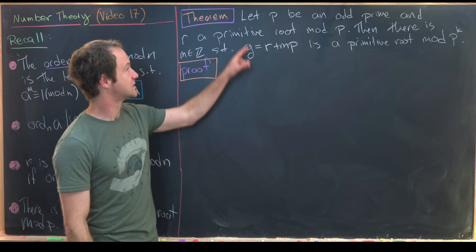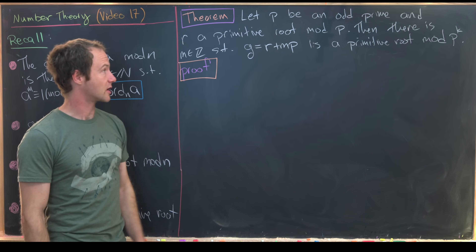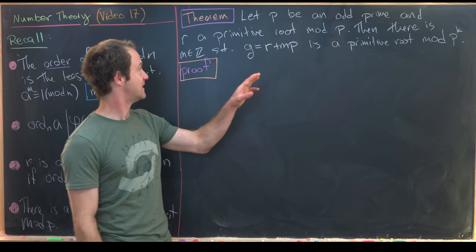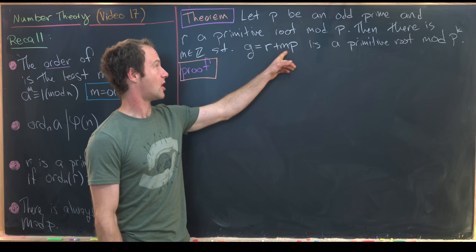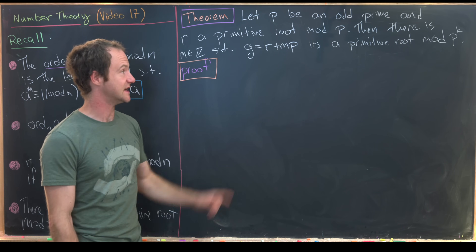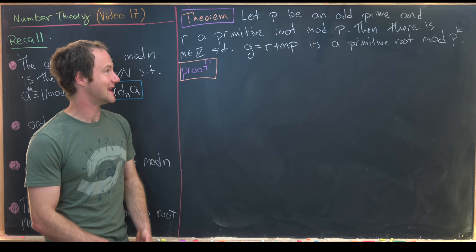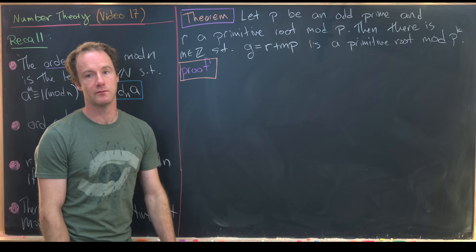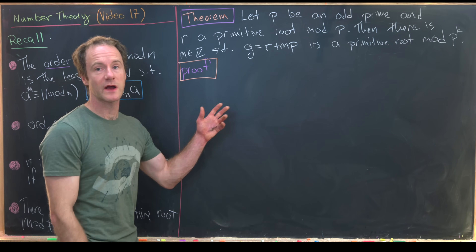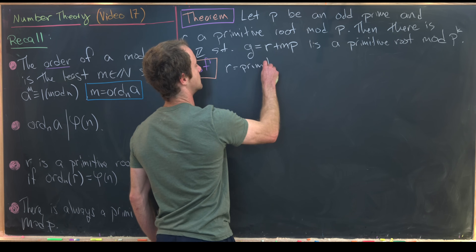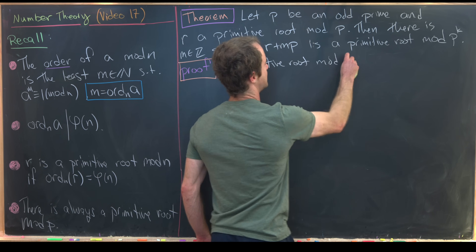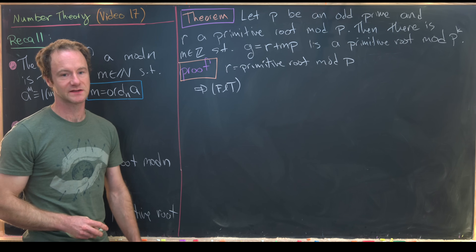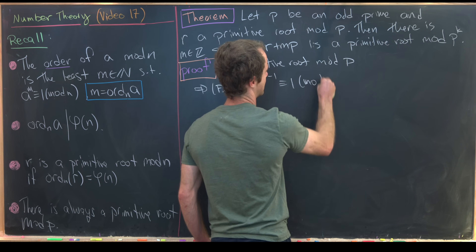Let's read this theorem more carefully. Let p be an odd prime and r a primitive root mod p — so we have a primitive root mod p by the theorem proved in the last video. Then there is an integer m such that r plus mp, which we set equal to g, is a primitive root mod p to the k, where k can be any natural number. So out of a primitive root mod p, we can create a primitive root mod p^k for any natural number k. We start with r as our primitive root mod p, and by Fermat's little theorem, r to the p minus 1 is congruent to 1 mod p.